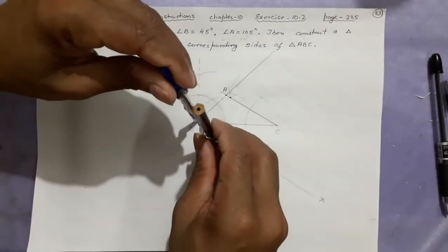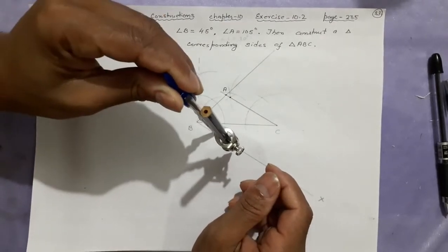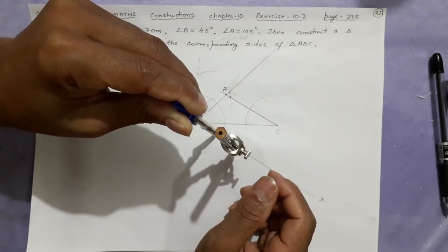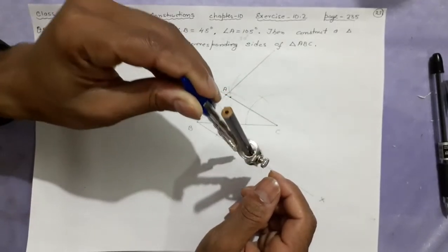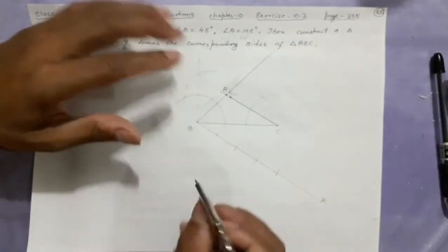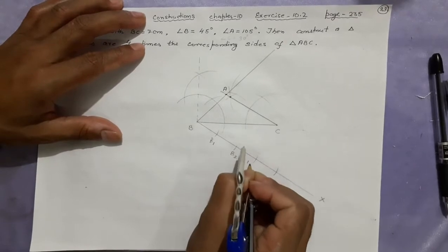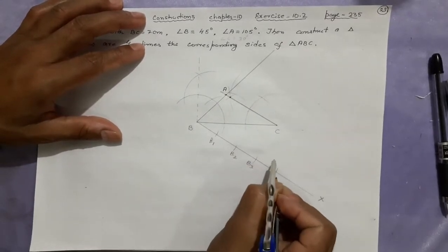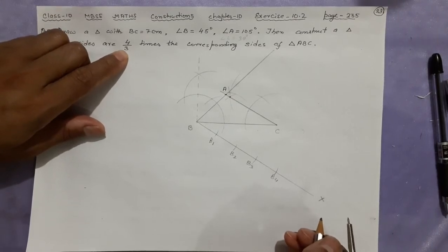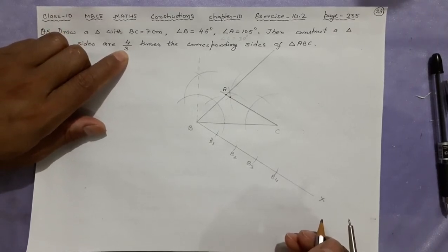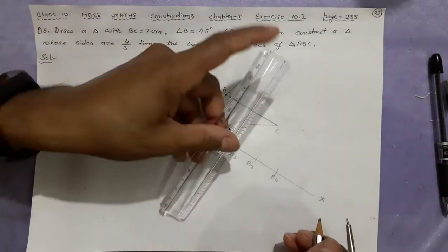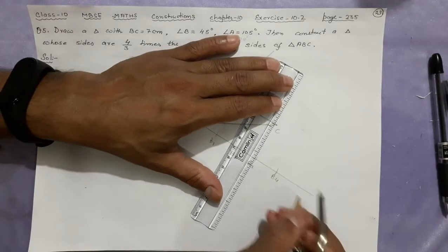Four by three means four times — the bigger number is four. Mark B1, B2, B3, B4 on ray BX. Now joining: since it is four by three, the one to join is the third point B3. So join B3 to C.